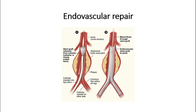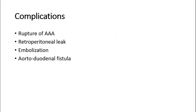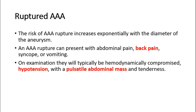The main complication of AAA is rupture. Other less common complications are retroperitoneal leak, embolization, and aortoduodenal fistula. The risk of AAA rupture increases exponentially with the diameter of the aneurysm. It can present with abdominal pain, back pain, syncope, or vomiting.